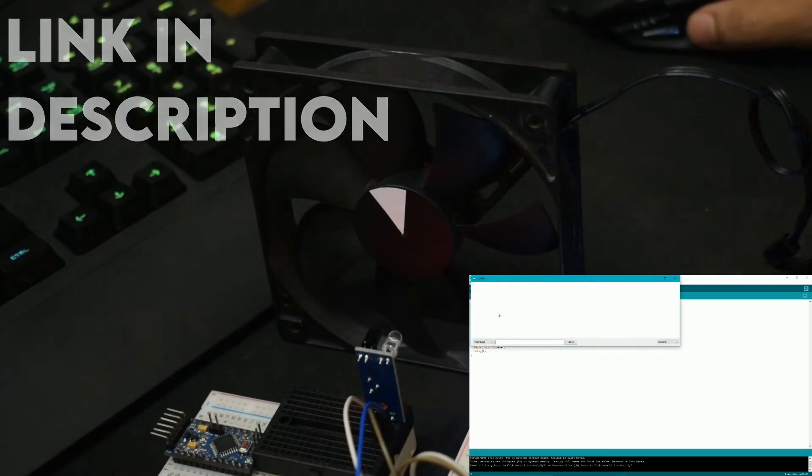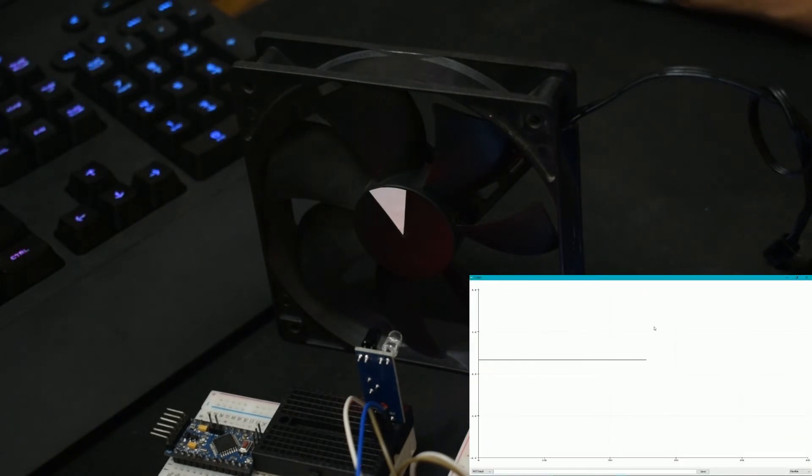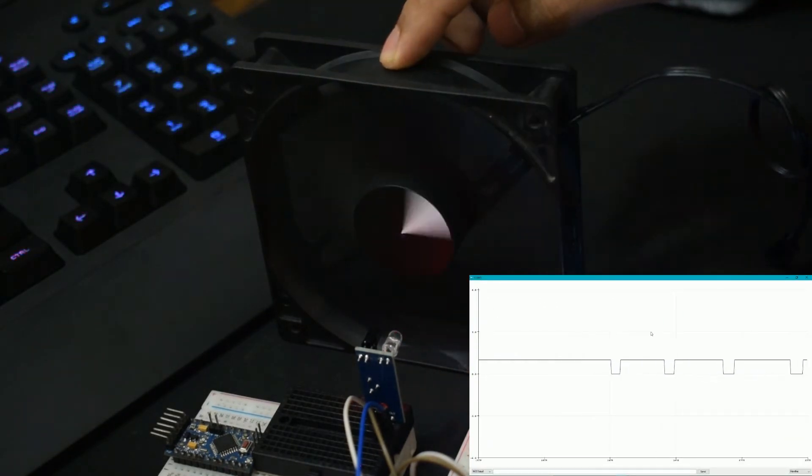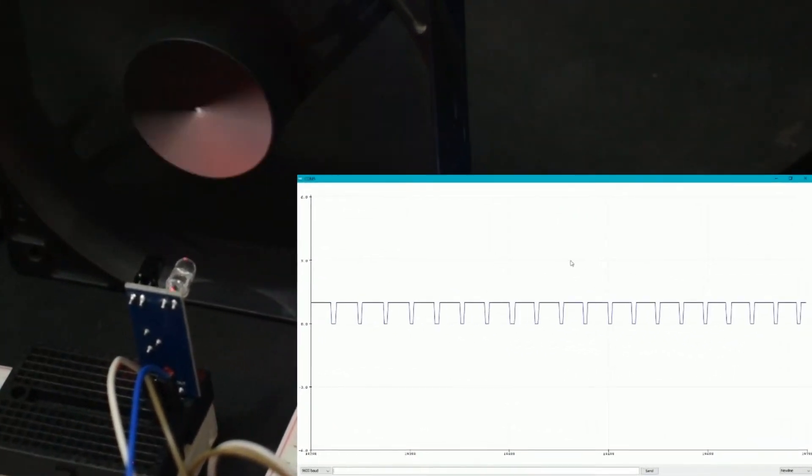Now let's run a test program to plot the wave generated by the IR sensor. The spikes that we see are the pulses generated by the sensor. To obtain the frequency of the wave, we simply calculate its time period by measuring the time between two consecutive rising or falling edges. And from the physics that we studied in 8th grade, we know that frequency is equal to the reciprocal of the time period.